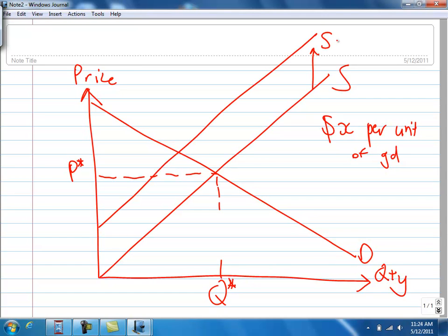Let's call it ST. This is the supply curve after you impose a specific tax. The vertical distance between these two supply curves is actually the X dollars per unit.